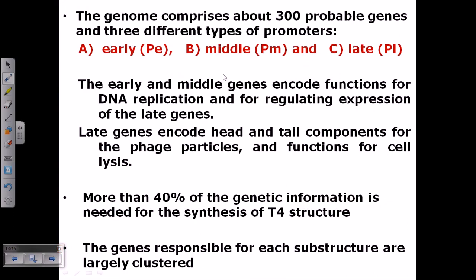The genome actually comprises about 300 probable genes and three different types of promoters. One is early, another is middle, and the third is late. So early promoter is called Pe, middle one is called Pm, and the late one is termed as Pl.